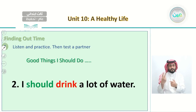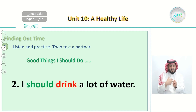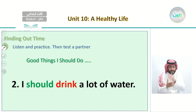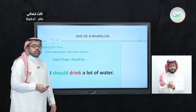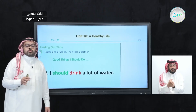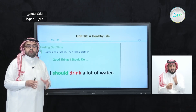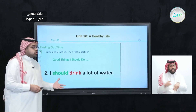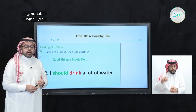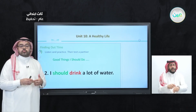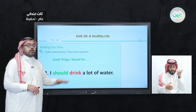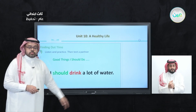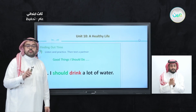Number two of the good things I should do: I should drink a lot of water. The second good thing we should do to have a healthy life is drink a lot of water, because it will keep us hydrated and active all the time. We should drink water when we get up, when we go to school, when we come back, and before we sleep at night.